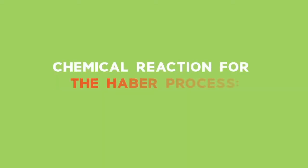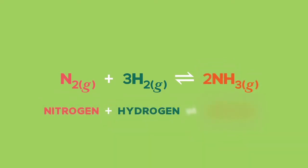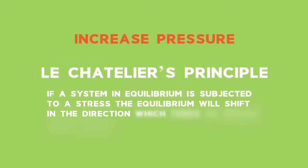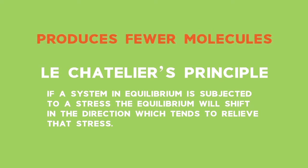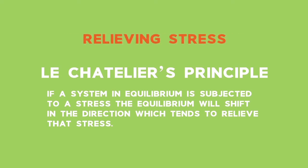Looking at the chemical reaction for the Haber process: N₂ gas plus 3H₂ gas reversibly goes to form 2NH₃ gas. There are 4 molecules of gas on the reactant side of the equation, but only 2 on the product side. Applying Le Chatelier's principle, if you increase the pressure, the equilibrium will shift to the side favouring the reaction which produces fewer molecules. This will result in the pressure decreasing again, relieving the stress.